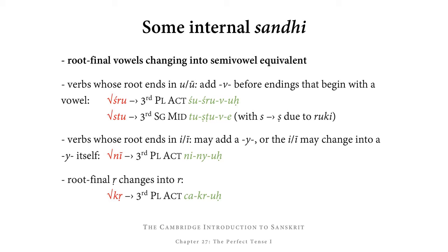Of stu, we find the third singular middle form tuṣṭuve. We have tu as the reduplicative syllable, ṣṭu as the root in zero grade — where we get a change from stu to ṣṭu due to ruki — and e as the ending. In between the root and the ending, v is added, keeping the root and the ending both properly recognizable.